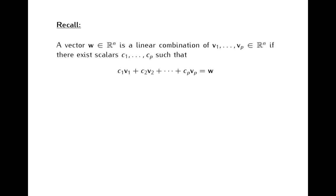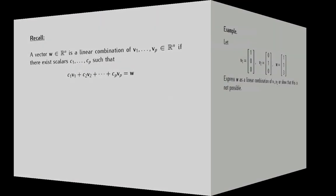Recall that the topic of the last segment was linear combinations of vectors. A vector w is a linear combination of vectors v1 through vp if there exist some scalars c1 through cp such that we can obtain w by multiplying v1 by c1, v2 by c2, and so on, and then adding these products together. In the last segment we also dealt with problems where the goal was to figure out if a given vector w is a linear combination of some other vectors, and let's start with one more problem of the same type.